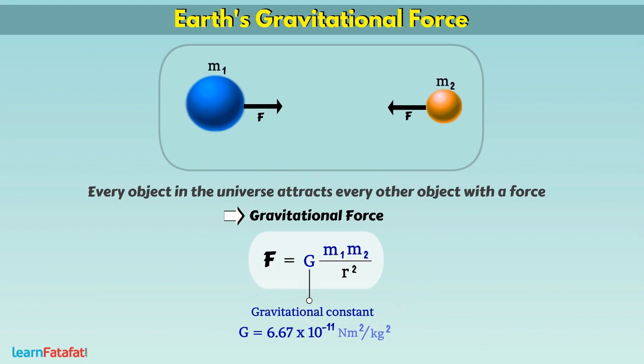M1 and M2 are masses of two objects and R is the distance between them.